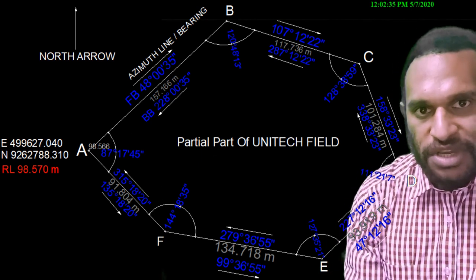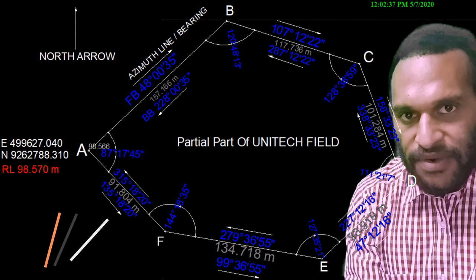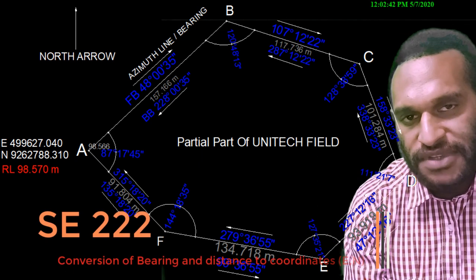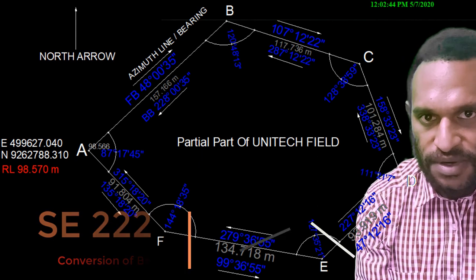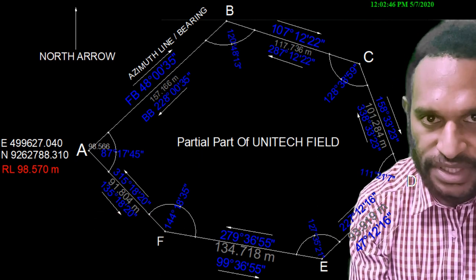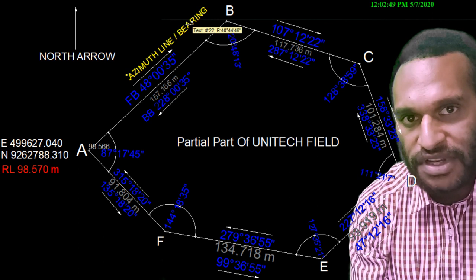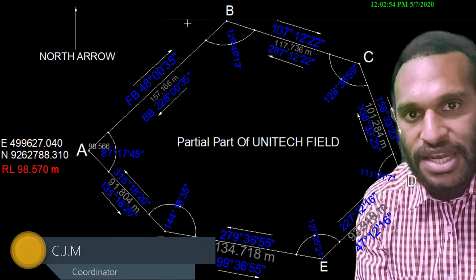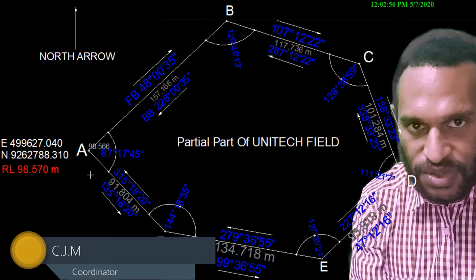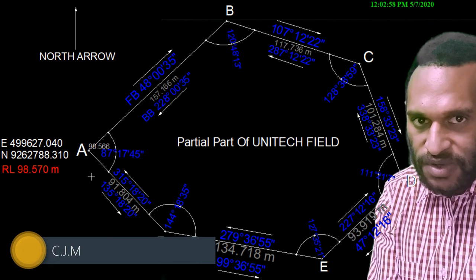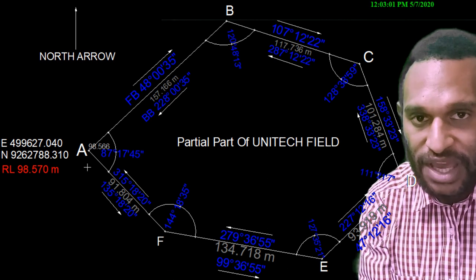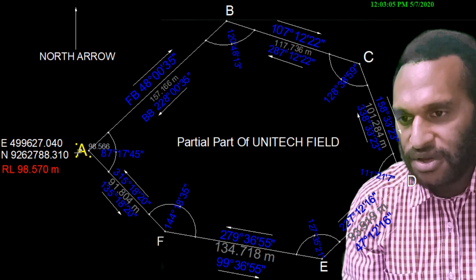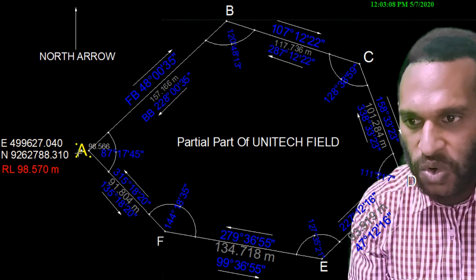Today our class will be about the conversions of bearing lines into coordinates. On our previous class we studied how to do conversions of internal angles to bearings with a non-reference azimuth or non-reference bearing point. For today's class, the same idea will apply to coordinates. To study transformations of coordinates from bearings, we need to have a known coordinate for a particular station. As you can see on the board, we have point A with the known coordinates.